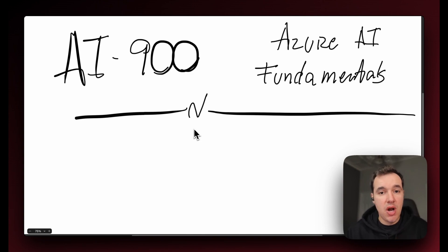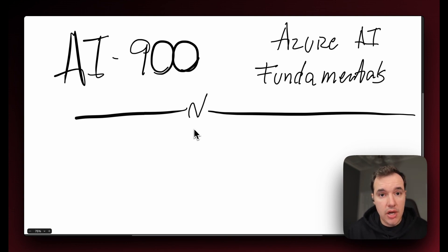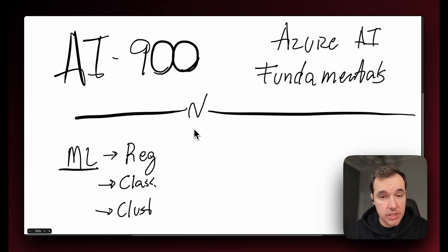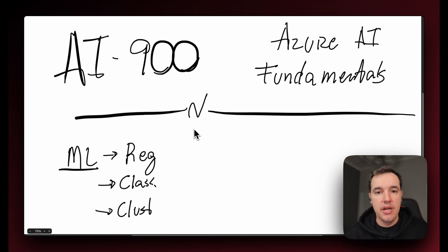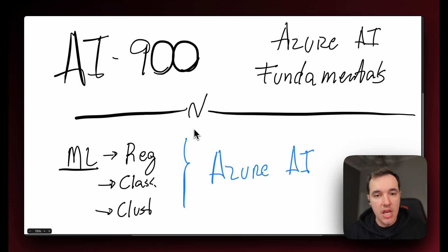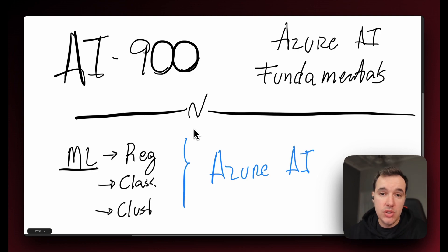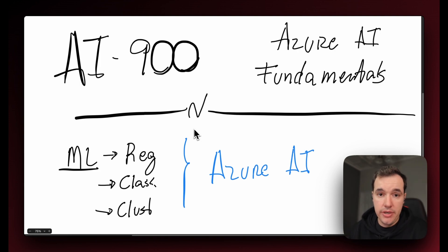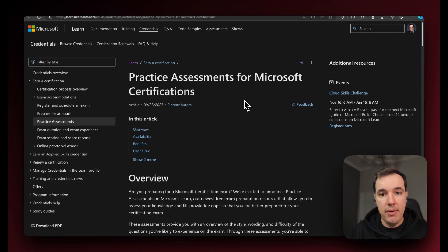Welcome back to the channel. In this video I want to talk about Azure AI, but most importantly the AI-900 certification that gets you into the industry for that particular domain. It touches on important topics such as machine learning and techniques like regression, classification, and clustering, as well as how these techniques can be applied utilizing Azure AI services. What I want to do is take you through the official free assessment available to everyone with access to the Microsoft Learn portal. The link will be in the description.